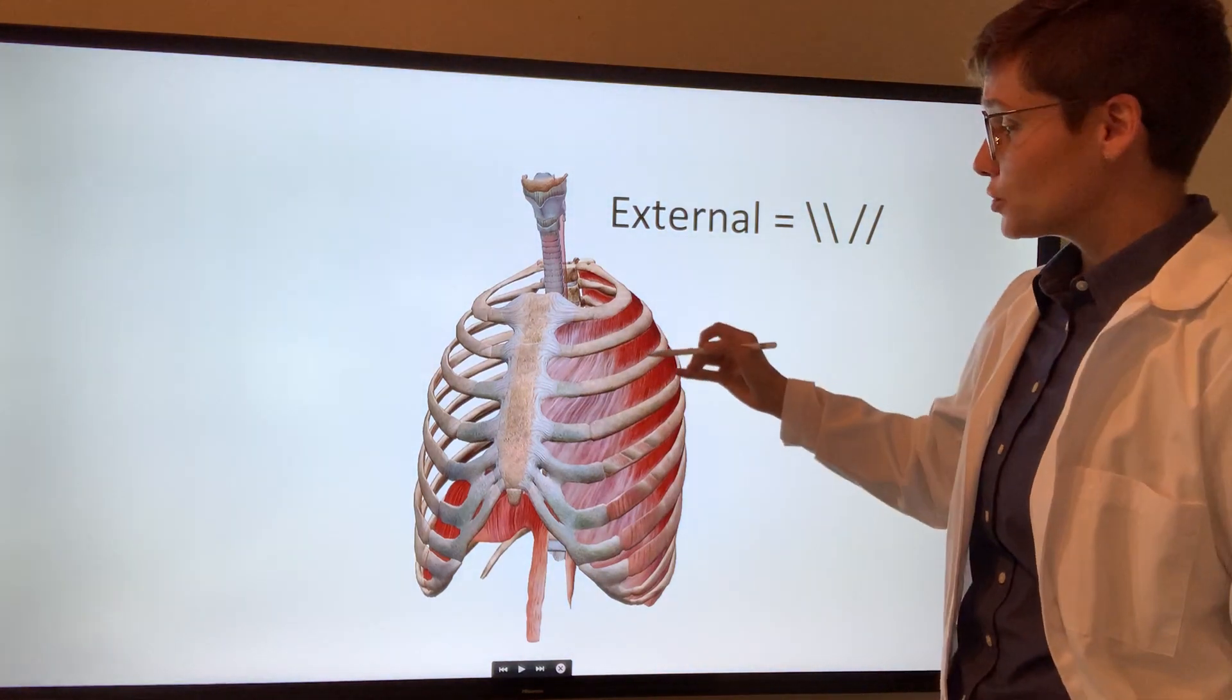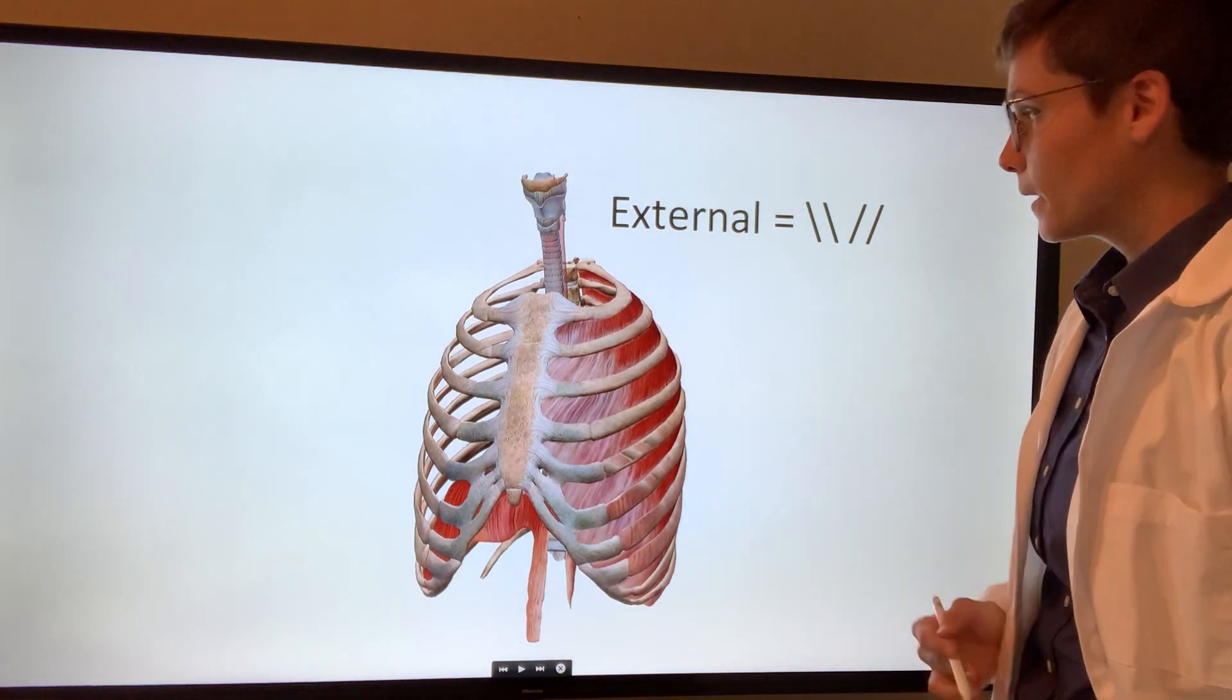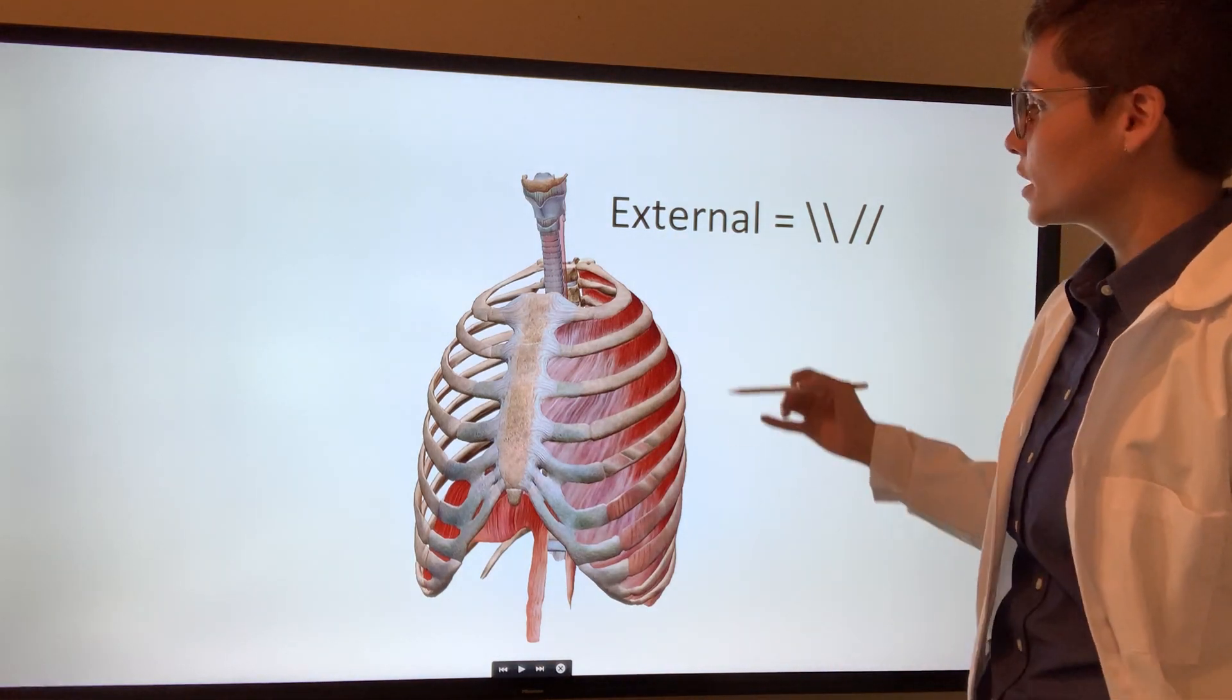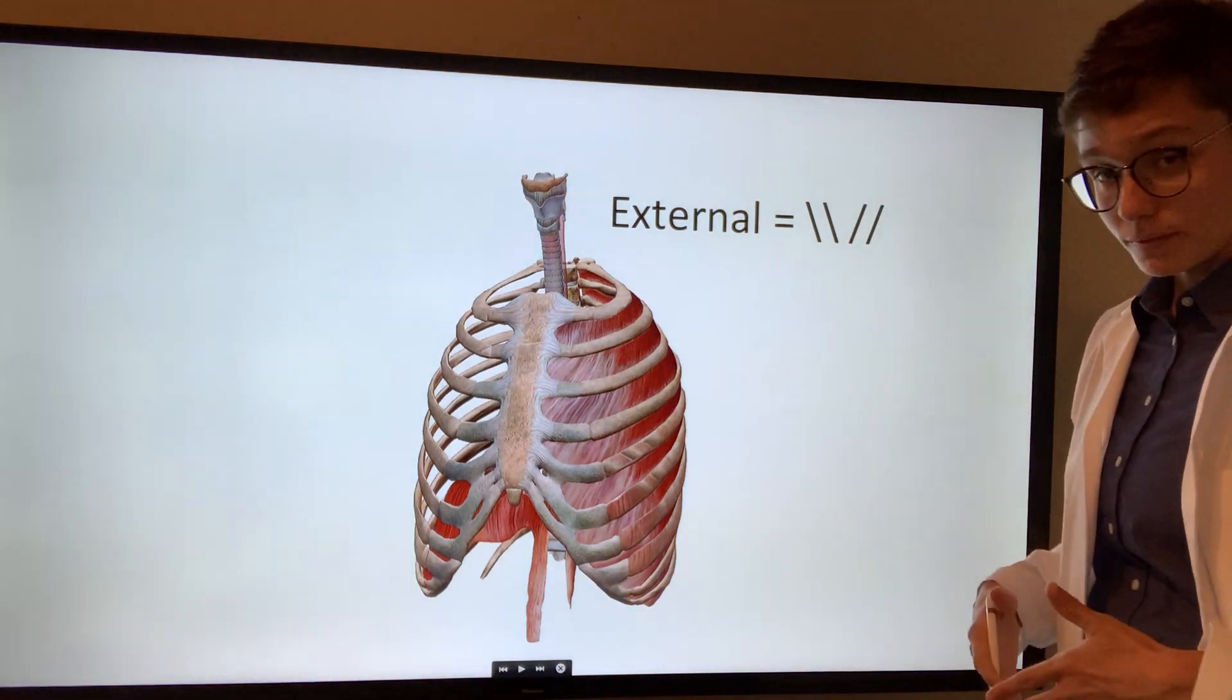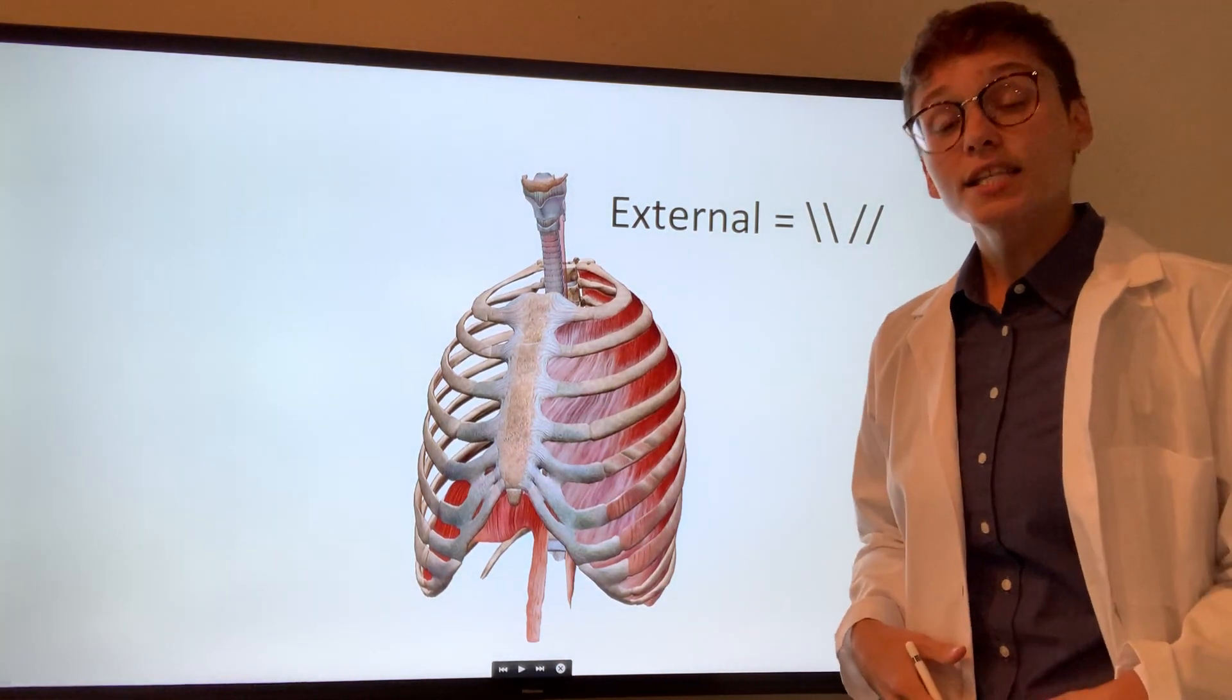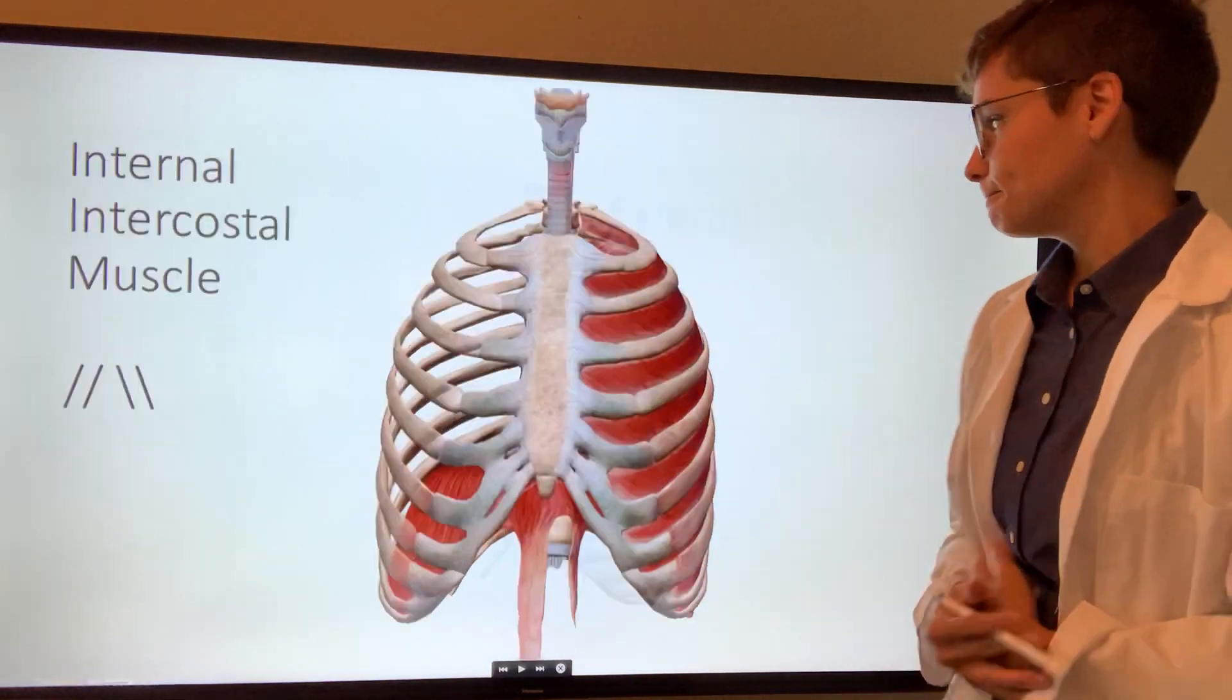Your intercostal spaces house your intercostal muscles and their corresponding vessels. Moving from anterior to posterior, first we'll see our external intercostal muscle, whose fibers run in this fashion and aid in inspiration by expanding and elevating your ribs.